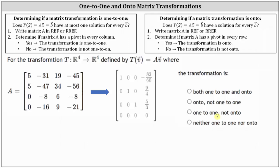Given matrix A, the easiest way to determine whether the transformation is one-to-one or onto is to write the transformation matrix in row echelon form or reduced row echelon form and determine the pivots. If the matrix has a pivot in every column, the transformation is one-to-one; if it doesn't, it's not. And if the matrix has a pivot in every row, the transformation is onto; if it doesn't, it's not.